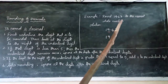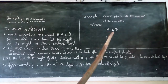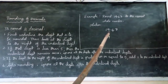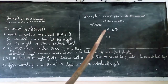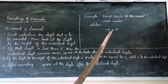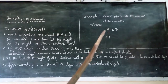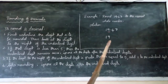Now this example: round 19.47 to the nearest whole number. Underline the ones digit. The digit to the right is 4, which is less than 5, so the underlined digit remains the same. Ignore the right side digits. The answer is 19.